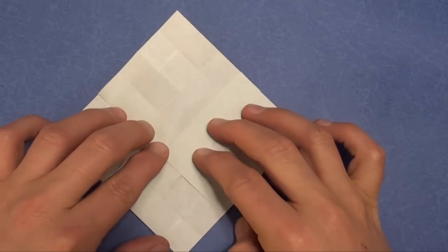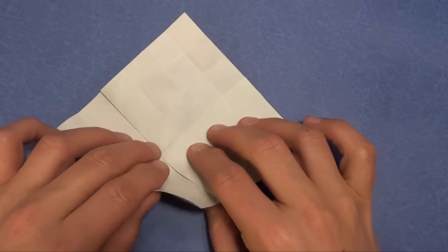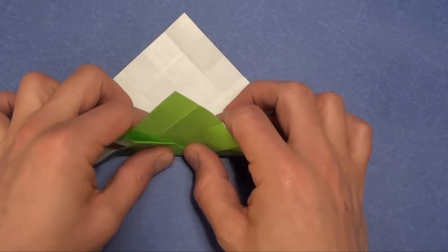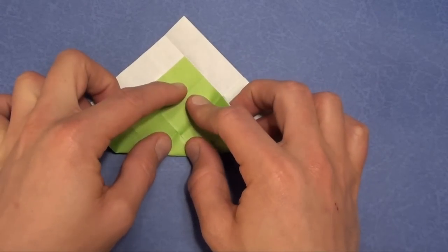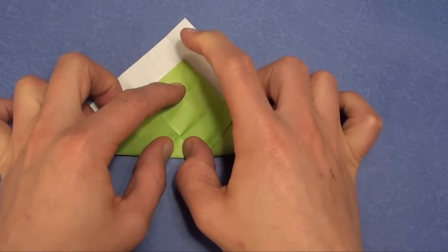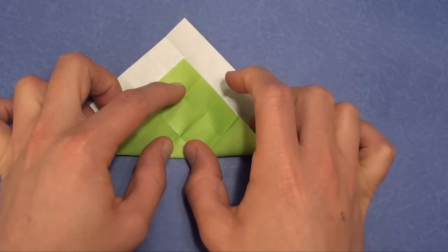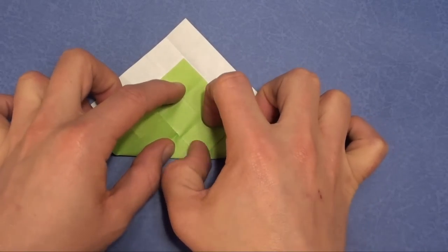And we're going to take that and we're going to fold it in half. Just the square, the thick square. Notice how the corner goes up to that top intersection of creases. Flatten it.